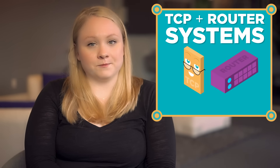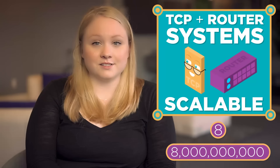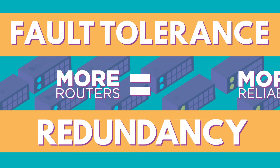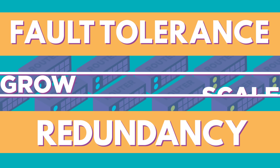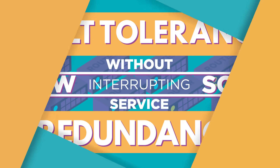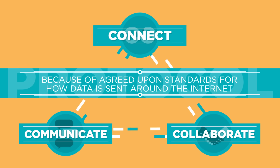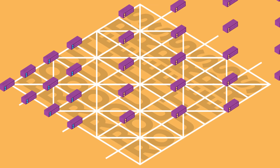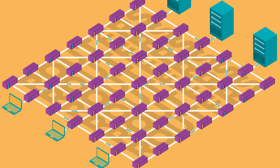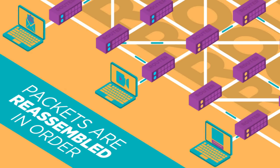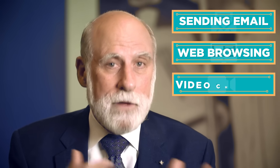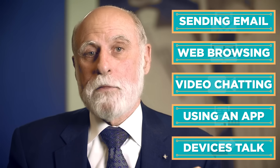What's great about the TCP and router systems is they're scalable — they can work with eight devices or eight billion devices. Because of these principles of fault tolerance and redundancy, the more routers we add, the more reliable the internet becomes. We can also grow and scale the internet without interrupting service for anybody using it. The internet is made of hundreds of thousands of networks and billions of computers and devices connected physically. These different systems connect, communicate, and work together because of agreed-upon standards for how data is sent around on the internet. Computing devices and routers along the internet help all the packets make their way to the destination where they're reassembled in order. This happens billions of times a day, whether you're sending an email, visiting a web page, doing a video chat, using a mobile app, or when sensors and devices on the internet talk to each other.